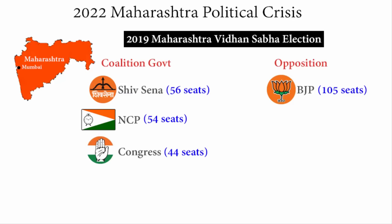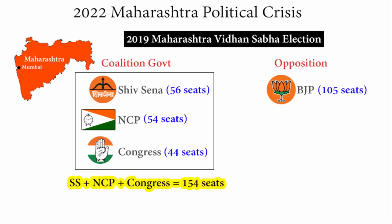But then BJP did not form the government. There was a coalition government of Shiv Sena, NCP, and the Congress party. If you add the total number of seats of only these three main political parties, it is 154 seats. Maharashtra state assembly has a total of 288 seats. That means if you want to form a government in Maharashtra, you need 145 seats — 288 divided by 2 plus 1. Shiv Sena, NCP, and Congress party together had 154 seats, which is well beyond the mark of 145 that is required.